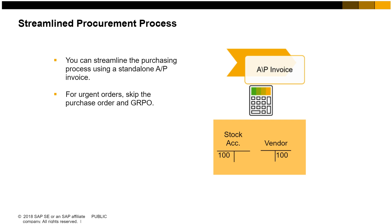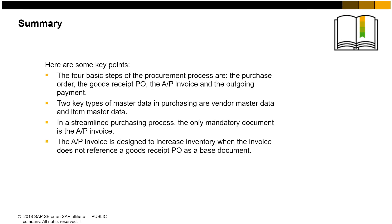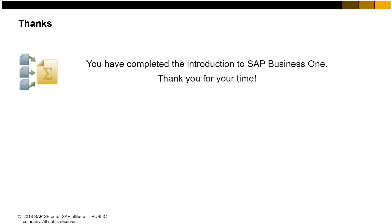Because an AP invoice that does not reference a goods receipt PO will increase inventory, it is important to make sure there is no prior goods receipt if you create an AP invoice without reference. The four basic steps of the procurement process are the purchase order, the goods receipt PO, the AP invoice, and the outgoing payment. Two key types of master data in purchasing are vendor master data and item master data. In a streamlined purchasing process, the only mandatory document is the AP invoice. The AP invoice is designed to increase inventory when the invoice does not reference a goods receipt PO as a base document. You have completed the introduction to SAP Business One. Thank you for your time.